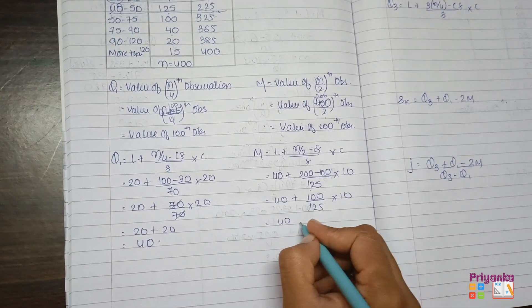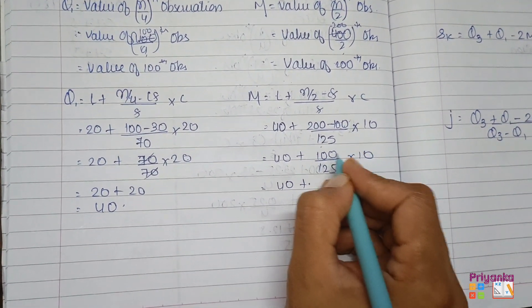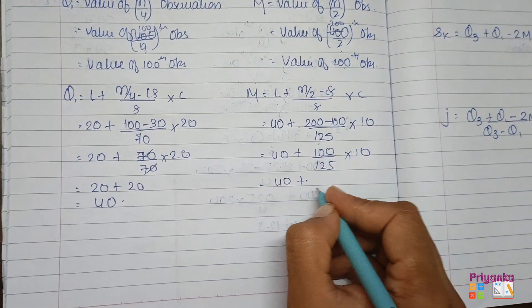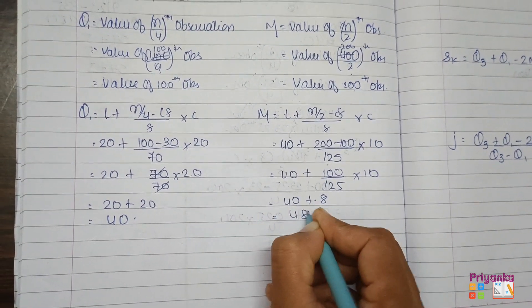Next, 40 plus 200 minus 100 will be 100 divided by 125 into 10. So 40 plus the calculation of this, you will get 8. So 40 plus 8 will be 48.